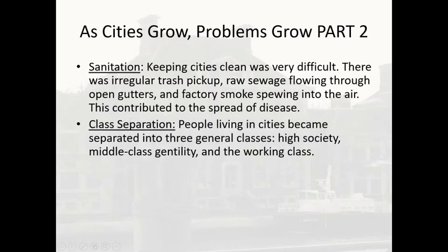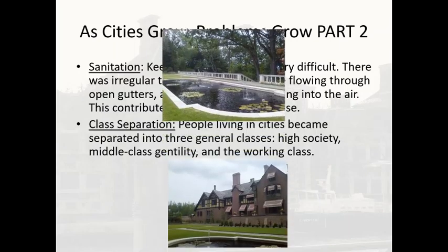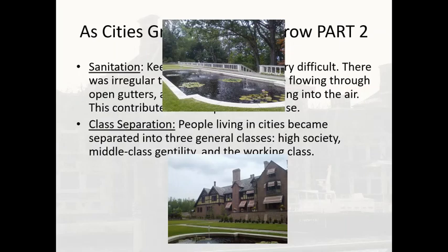Class separation was another problem. People living in cities became separated into three general classes: high society, middle-class gentility, and the working class, visible in the different types of houses people built. Tycoons like Andrew Carnegie and Rockefeller had huge mansions and castles, whereas the working classes lived in tenements — a huge divide between the two.